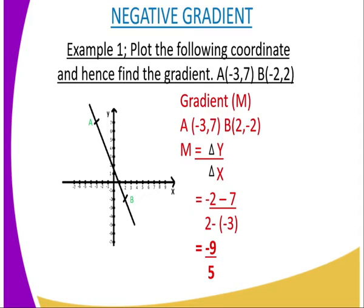In this example, you are supposed to plot the following coordinates and hence find the gradient. Coordinate A is (-3,7). You can see negative 3, then you rise up to where 7 is, then you put a mark there, that is position A. Then we go to B. There is an error there, it should be 2 and negative 2. So coordinate B should read (2,-2). You can see how it is plotted: 2 positive and negative 2 on the y axis.